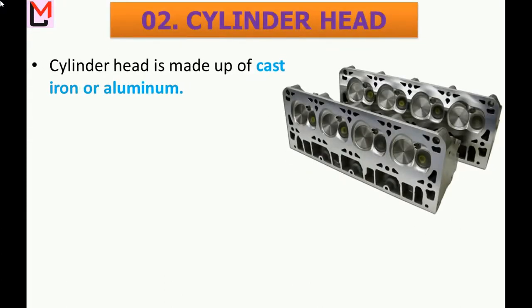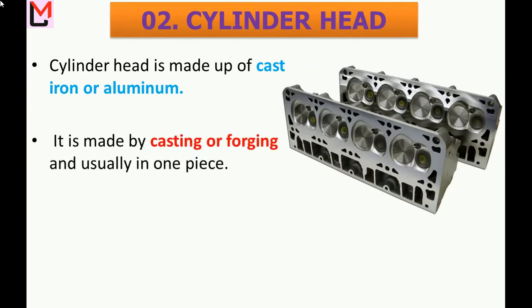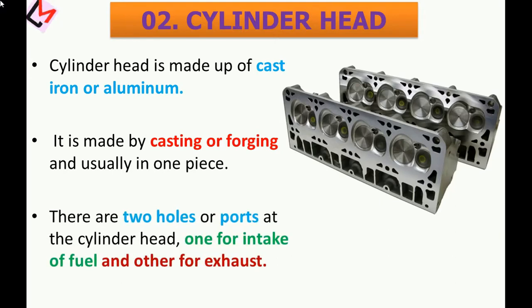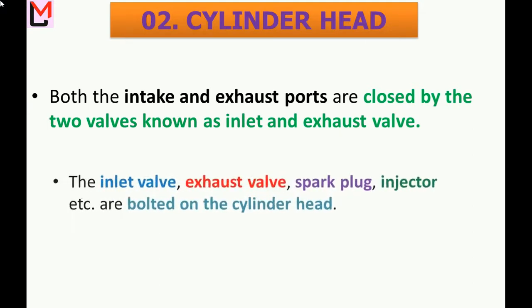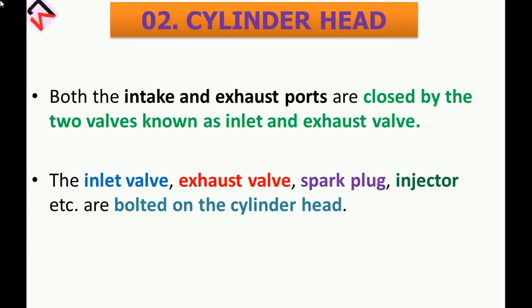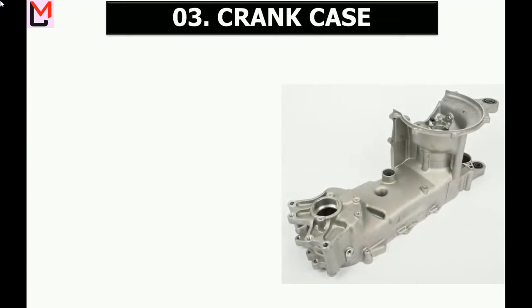The cylinder head is made up of cast iron or aluminium material. It is usually in one piece and made by casting or forging operation. There are two holes or ports at the cylinder head — one for intake of fuel and the other for exhaust. Both the intake and exhaust ports are closed by two valves known as the inlet and exhaust valve. The inlet valve, exhaust valve, spark plug, injector, etc. are bolted on the cylinder head.